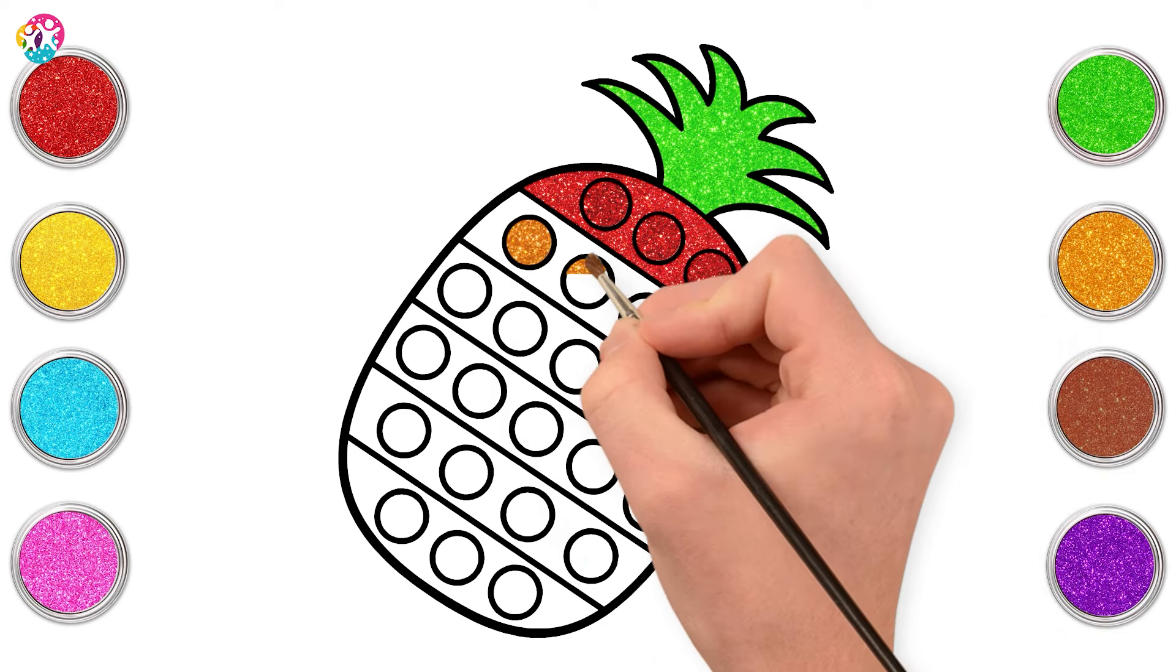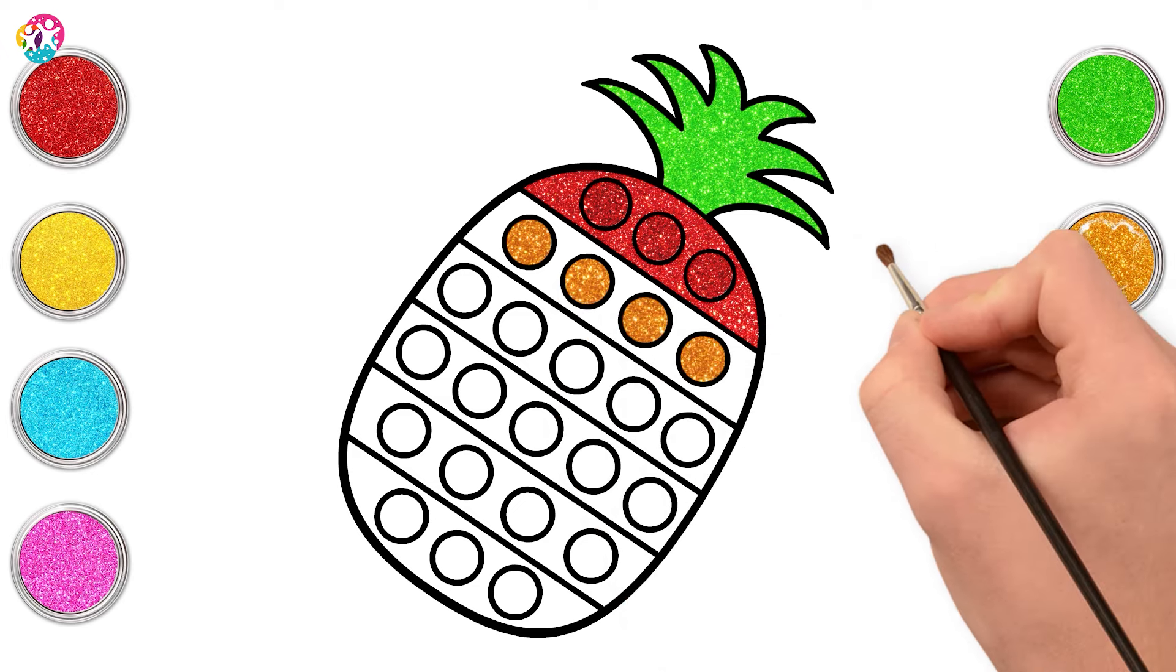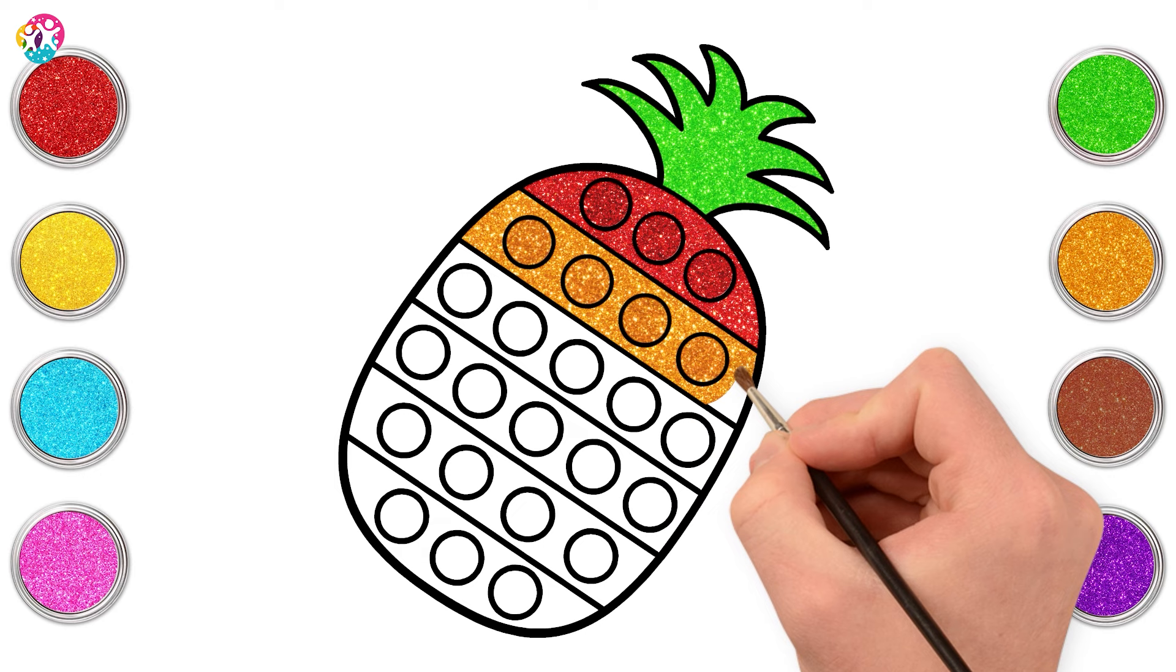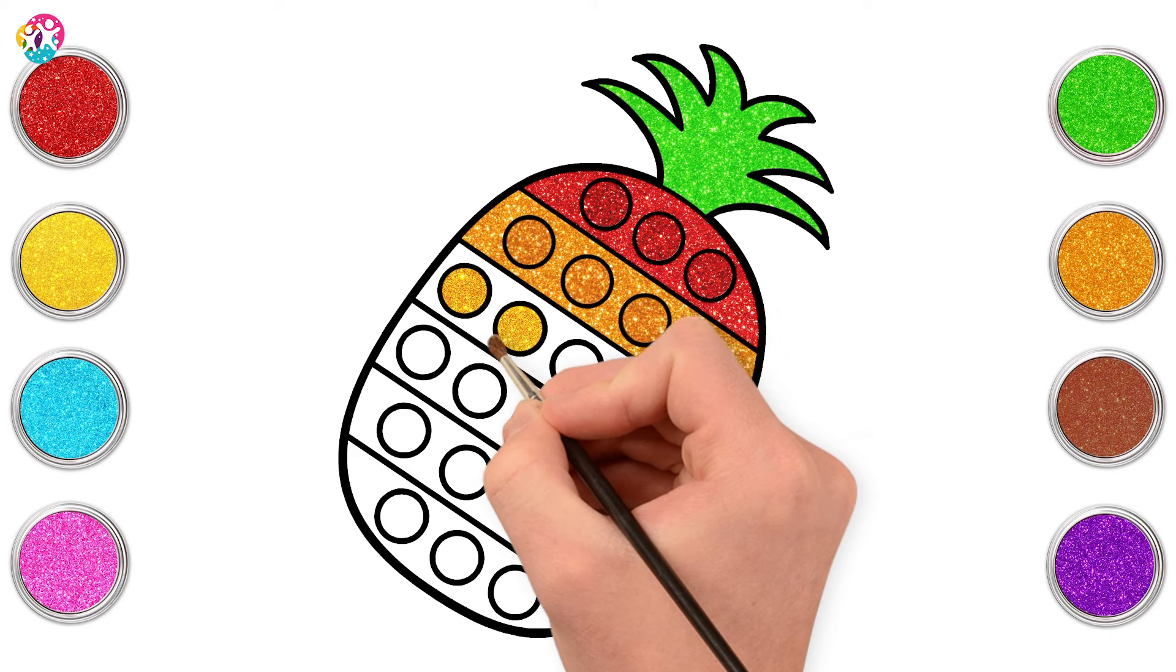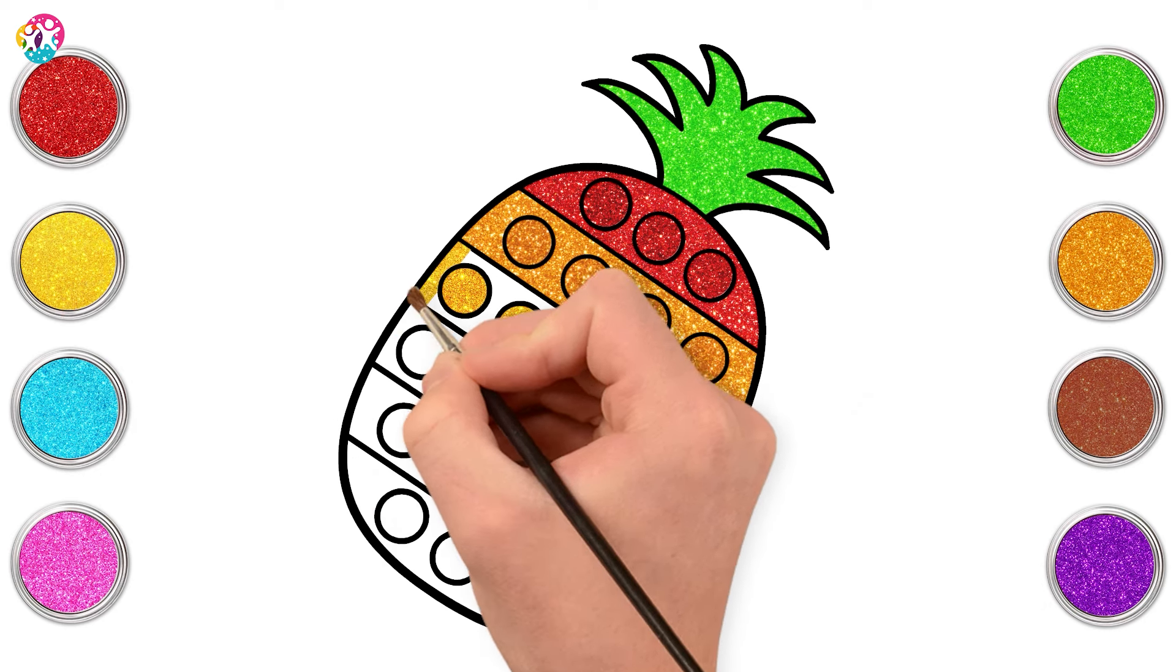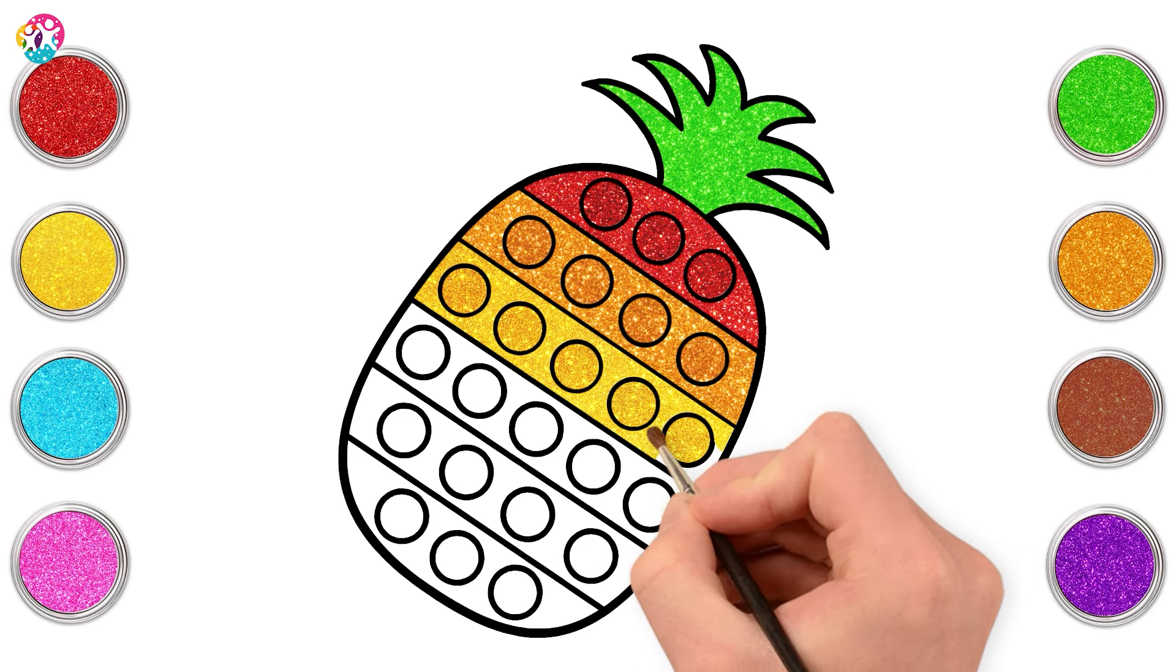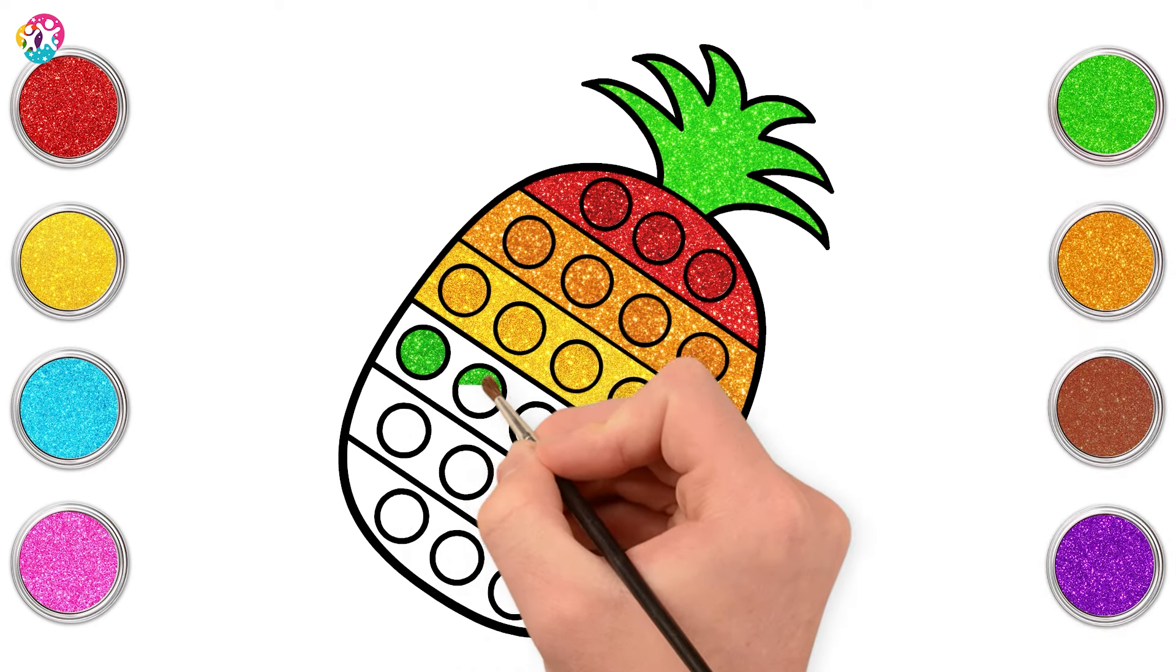Shiny orange next. Neat and tidy, one circle at a time. Yellow! Bright just like the sun. One line to match the spike with green.